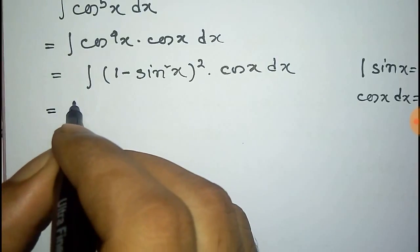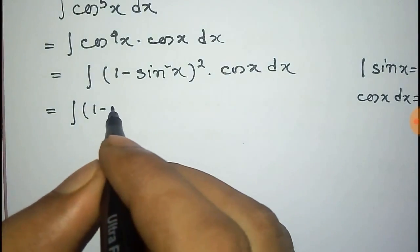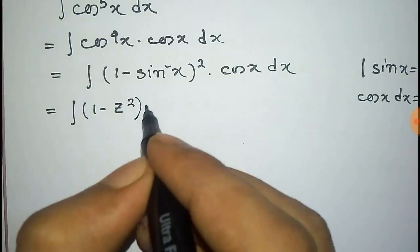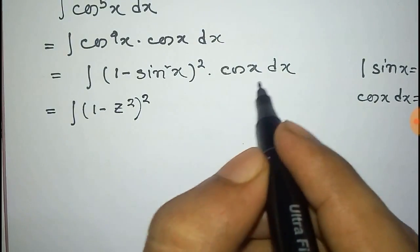Now putting this condition on this we get 1 minus z square whole square into this is dz.